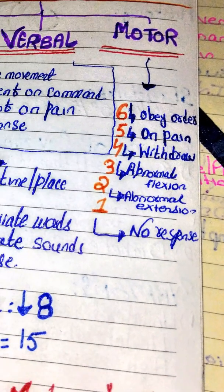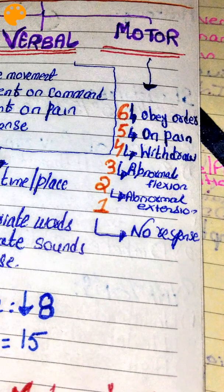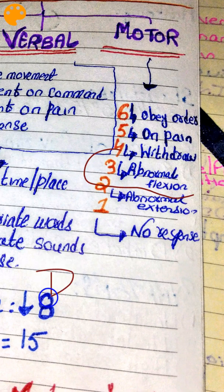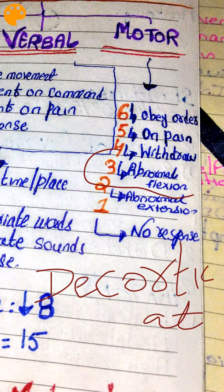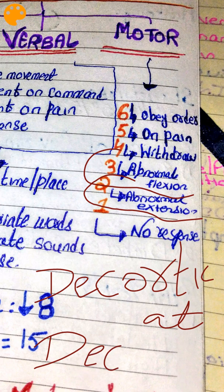One more thing: M3, abnormal flexion, has another medical term — it is called Decorticate. Remember it by the word 'cortex.' M2, abnormal extension, is called Decerebrate. Remember it by the word 'cerebrum.'